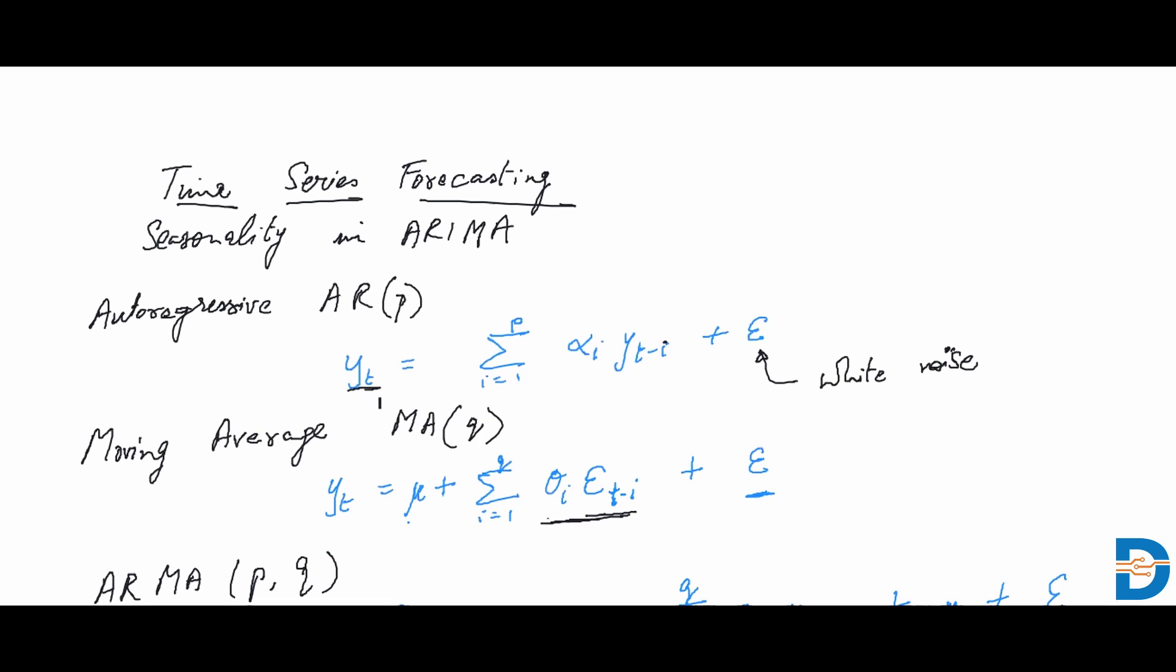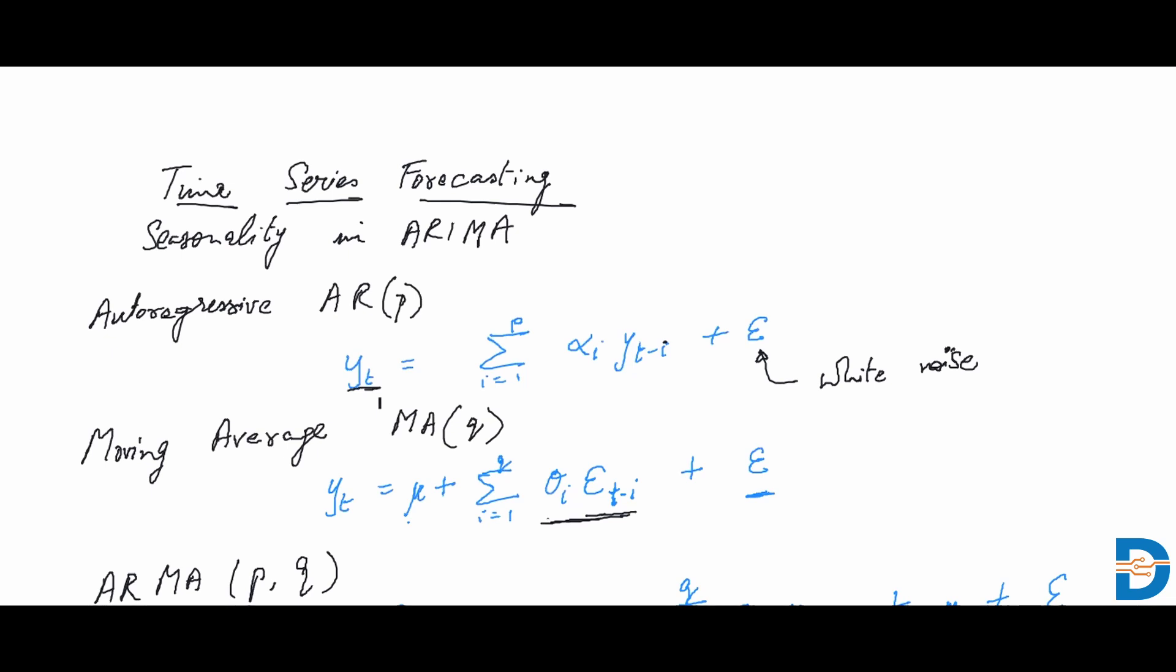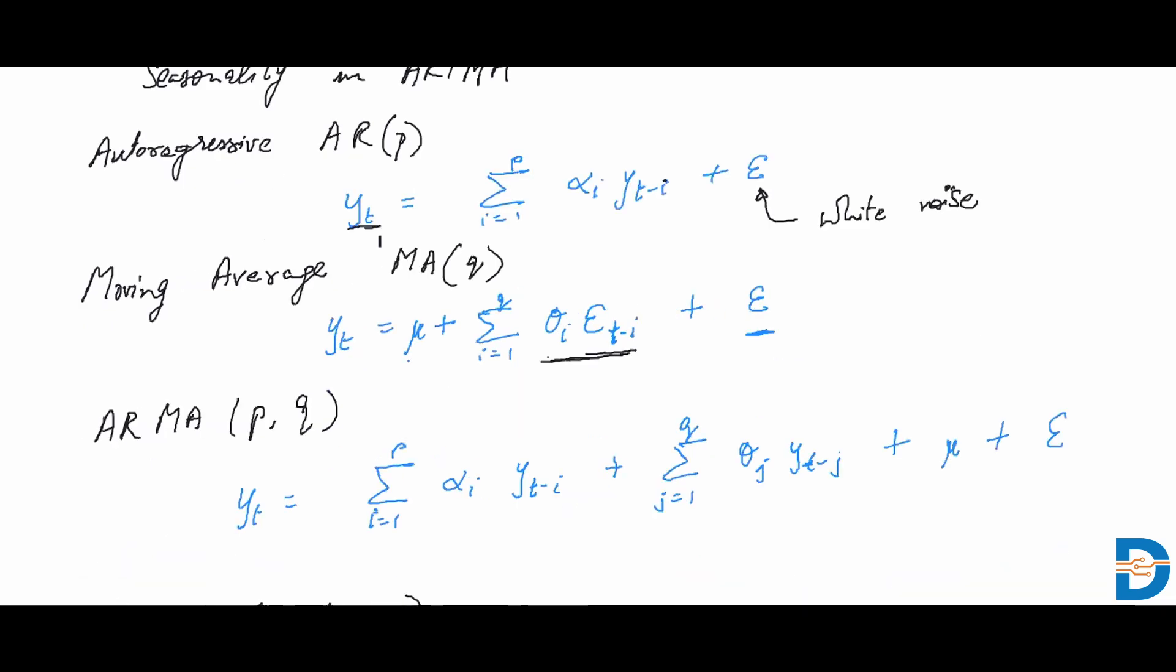So that's for auto regressive and moving average. Typically, as you go deeper in terms of analyzing past observations, we end up combining auto regressive as well as moving average. Using just one is not so much of a common occurrence. So that's what happens in the ARMA model, which is nothing but auto regressive moving average combined together.